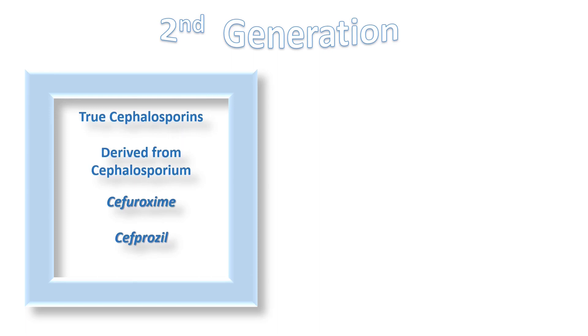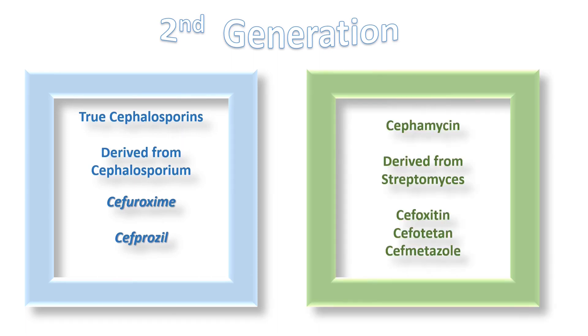Now let's talk about second generation cephalosporins. They are broken up into two groups: the first group contains two true second generation cephalosporins derived from Cephalosporium, and the other group is the cephamycins derived from Streptomyces. The two true second generation cephalosporins are cefuroxime and cefprozil, while the cephamycins include cefoxitin, cefotetan, and cefmetazole.